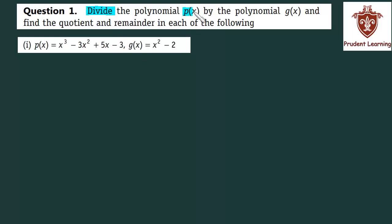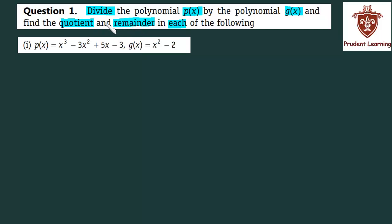Divide the polynomial px by the polynomial gx and find the quotient and remainder in each of the following. Question में 3 sections हैं, एक-एक के 3 sections solve करते हैं. आपको 2 polynomials given हैं — एक px और एक gx — और finally quotient और remainder बताना है. चलिए, solve करते हैं question.